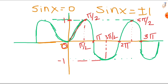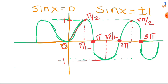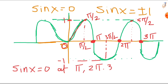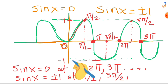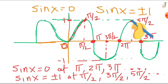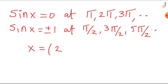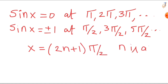Plotting the graph of sin x, we can see that sin x equals 0 at x equal to 0, pi, 2pi, 3pi, and so on. We also observe that sin x equals plus or minus 1 at x equal to pi by 2, 3pi by 2, 5pi by 2, and so on. Hence we can say that x equals (2n plus 1) times pi by 2, where n is an integer.